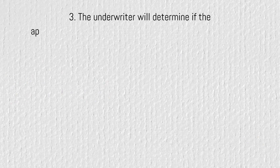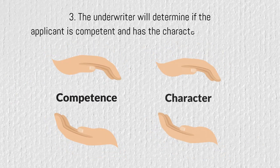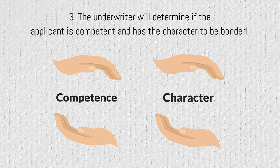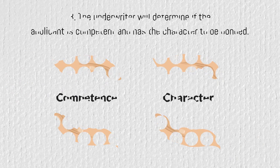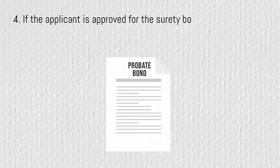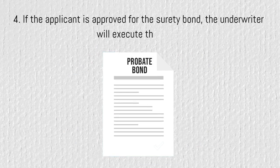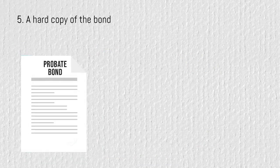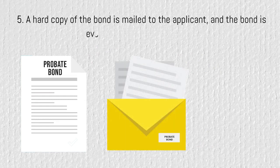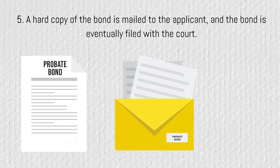During the underwriting process, the underwriter will need to determine if the applicant is competent and has the character to be bonded. If the applicant is approved for the surety bond, the underwriter will execute and finalize the bond. A hard copy of the bond is mailed to the applicant or applicant's attorney, and the bond is eventually filed with the court.